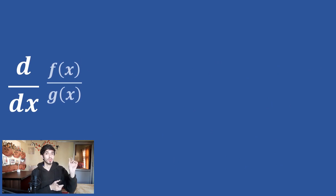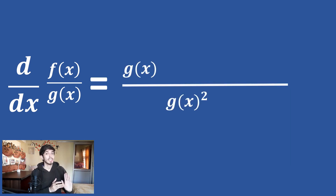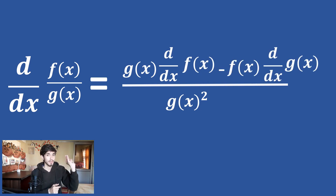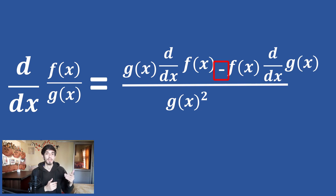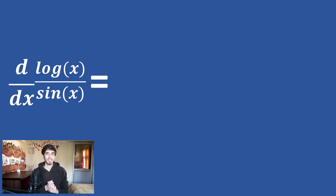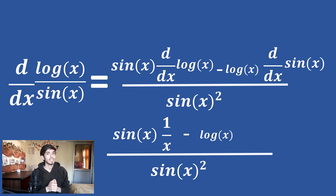Differentiation of two functions divided by each other — memorize it like this: bottom squared in the denominator; numerator is bottom as-is times differentiation of top, minus top times differentiation of bottom. Remember there is always a minus here — a lot of people make the mistake of putting plus. For example, differentiation of log x divided by sin x gives: sin squared x in the denominator; sin x times 1 upon x, minus log x times cos x in the numerator.